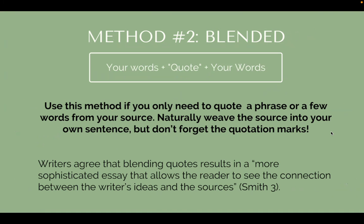Method two is blended — your words, the quote, then your words. It's a word sandwich. Use this if there's a particular part of a phrase that you really like but you don't need to quote the entire thing. You can weave in part of a quote. Example: "Writers agree that blending quotes results in 'a more sophisticated essay that allows readers to see the connection between the writer's ideas and sources.'" Then you add your own words after.